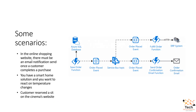It's worth mentioning some scenarios where event-driven architecture is applied. For instance, in an online shopping website, we would like to send an email notification once the customer completes a purchase. Or, if we have a smart home solution, we would like to have an alert once the temperature increases — so once the temperature is too high, we receive an alert.